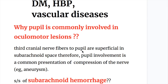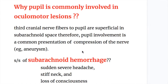Why is the pupil commonly involved in oculomotor lesions? Third cranial nerve fibers to the pupil are superficial in the subarachnoid space. Therefore, pupil involvement is a common presentation of compression of the nerve, for example from an aneurysm or from a tumor.